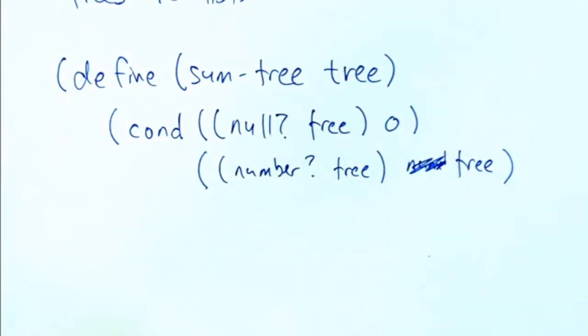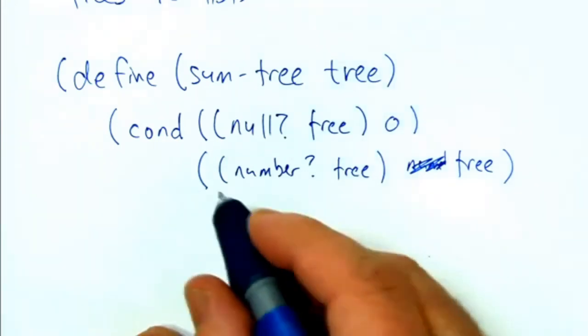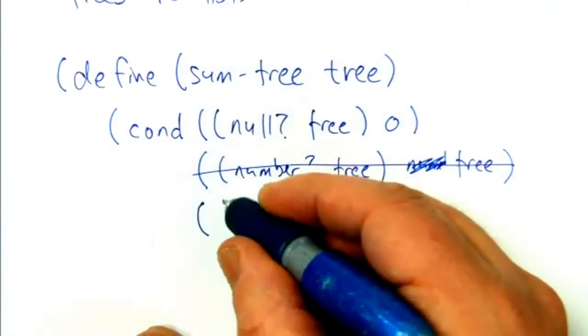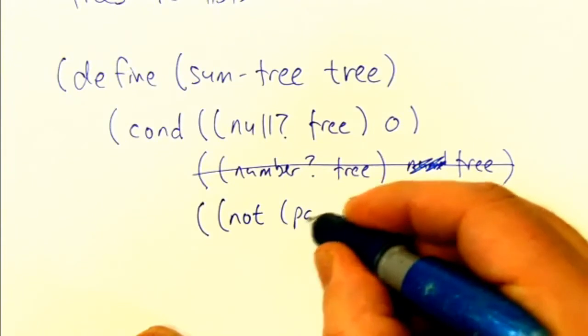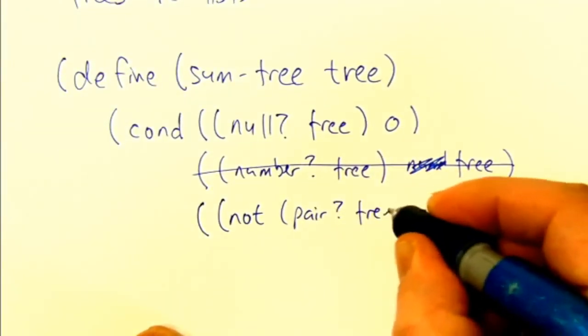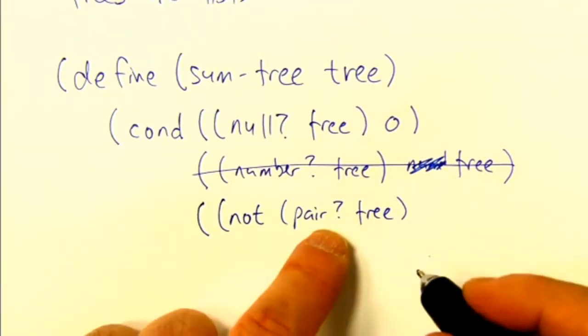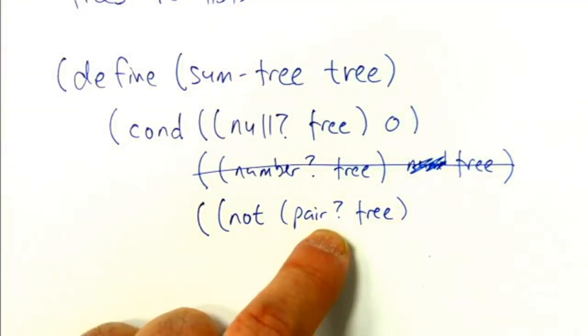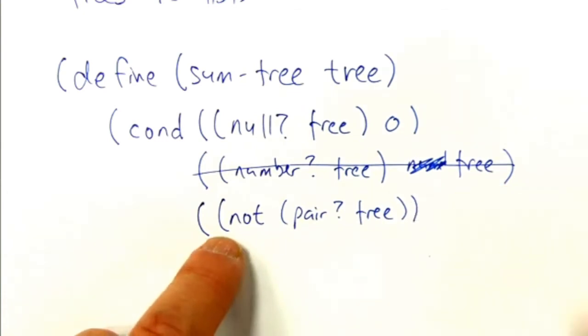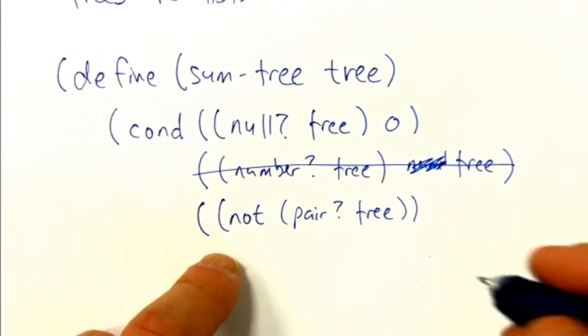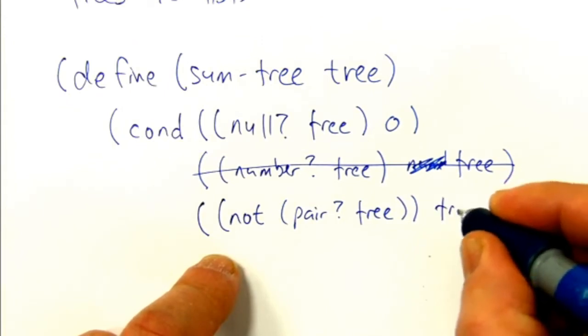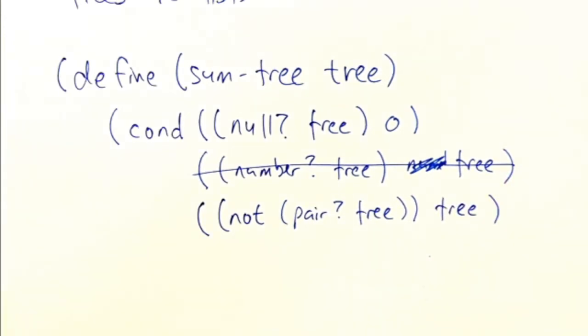But I'm going to do it a more general way because we won't always be dealing with numbers. We might have other objects in our tree. So instead of that, what we're going to say is, is it not a pair? Meaning, so pair says, is it a con cell? So either we're still in the midst of a tree or we've worked our way down to the end. So if it's not a pair, then it's an element, which in this case we know is a number. And so the sum of that number is the number itself. So for numeric trees, those two things will behave the same way. But we're going to use the more general one. And we might have trees of symbols or some other objects.